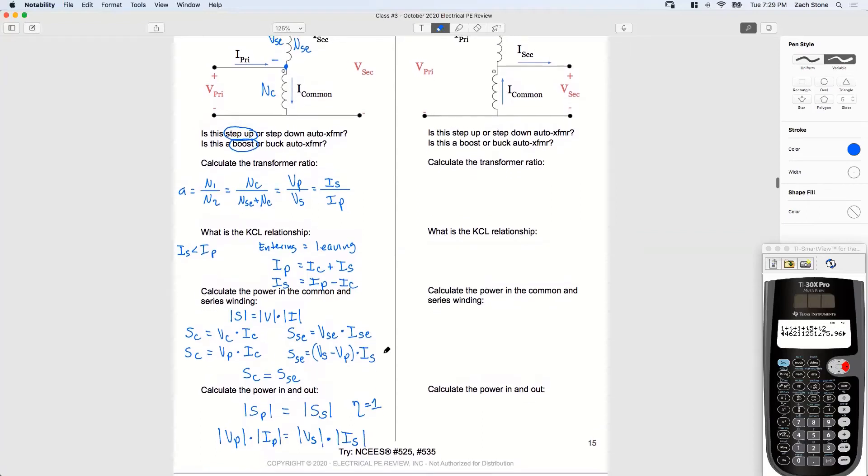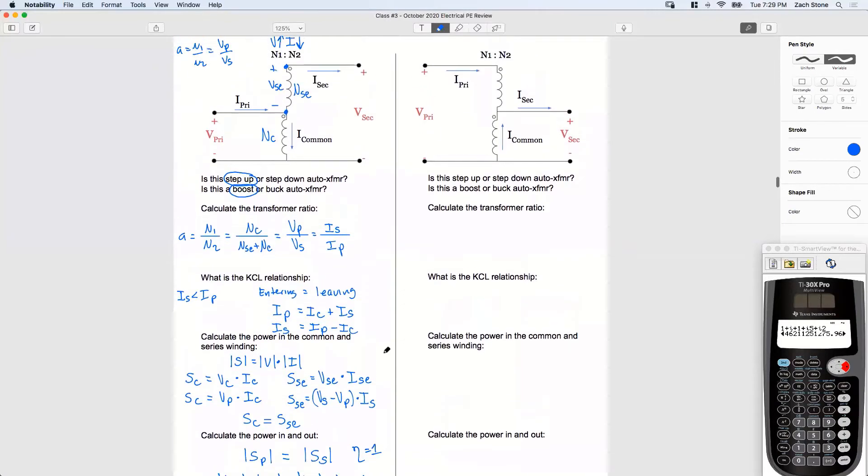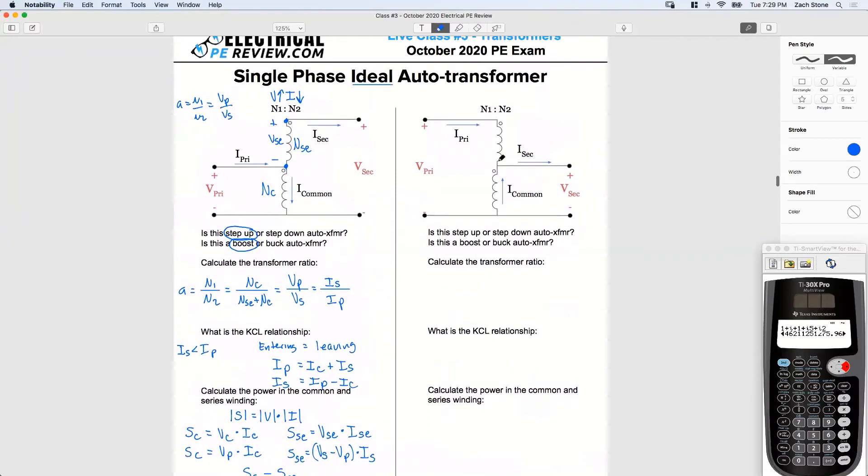Alright, that's it for the step up auto transformer. Let's do the same, well let's compare it to this one. So on the right, is this a step up or step down auto transformer? And how can we tell? Are we stepping up or stepping down?